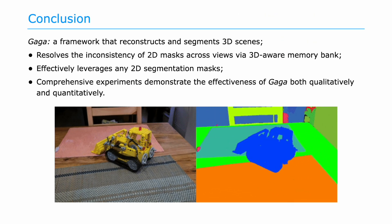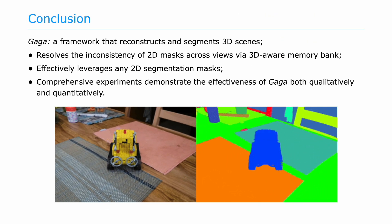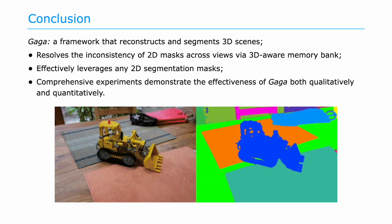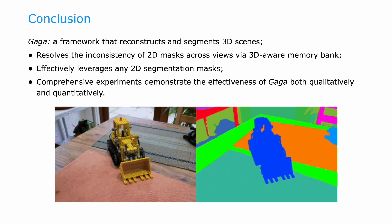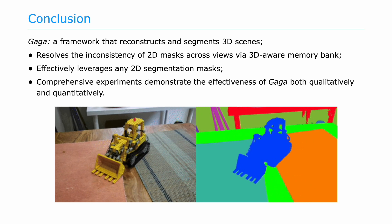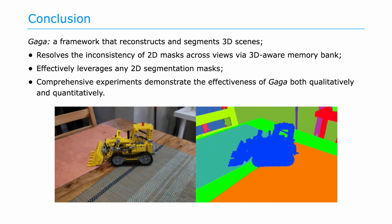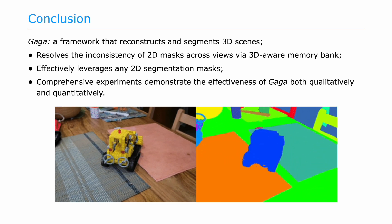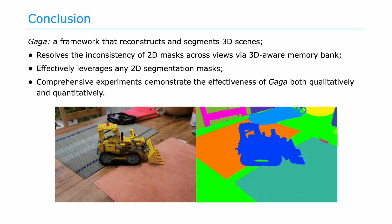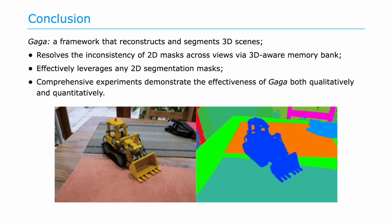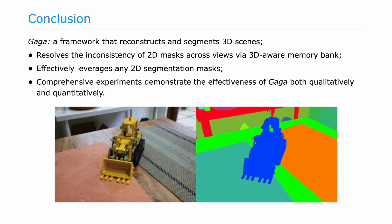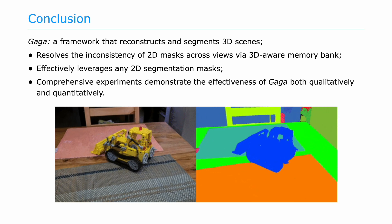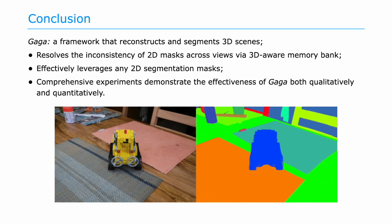In summary, we propose GAGA, a framework that reconstructs and segments 3D scenes using inconsistent 2D masks generated by open-world segmentation models. We design a 3D-aware memory bank that collects Gaussians of the same semantic group to resolve the inconsistency of 2D masks across views. We show that the proposed method can effectively leverage any 2D segmentation masks, and we conduct comprehensive experiments on diverse datasets and challenging scenarios, including sparse input views, to demonstrate its effectiveness both qualitatively and quantitatively.